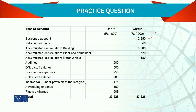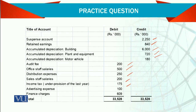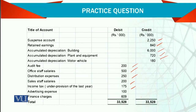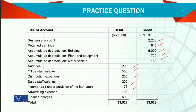There is a suspense account — something which is not clear and the accountant doesn't know where to report it or how to record it. Then retained earnings, accumulated depreciation covering all three assets, audit fee, official salaries, distribution expenses, staff salaries, income tax under-provision of last year, finance charges, and the total will make the trial balance agree.